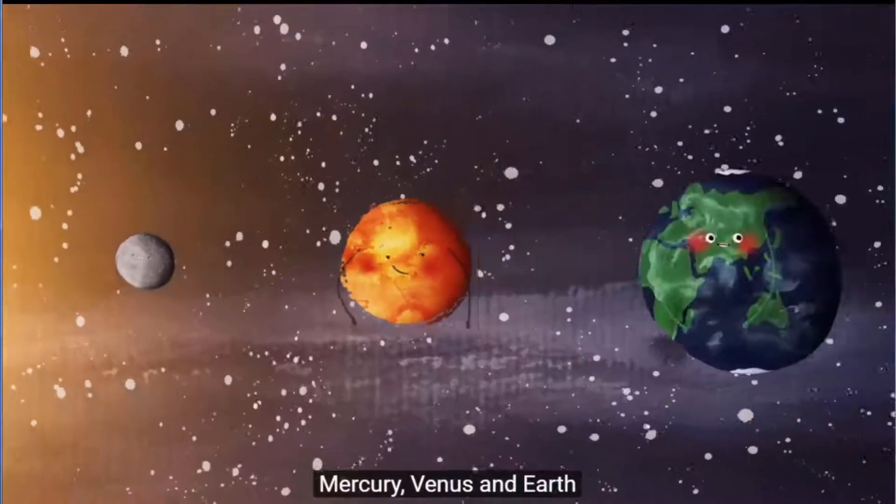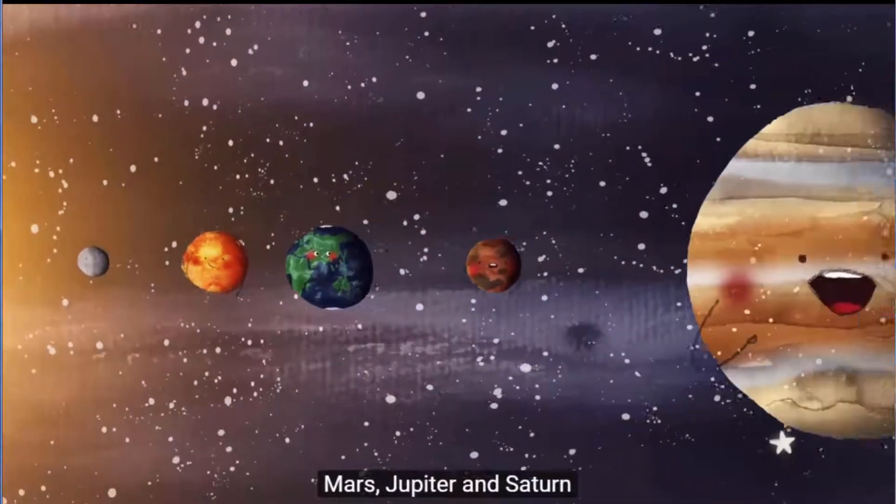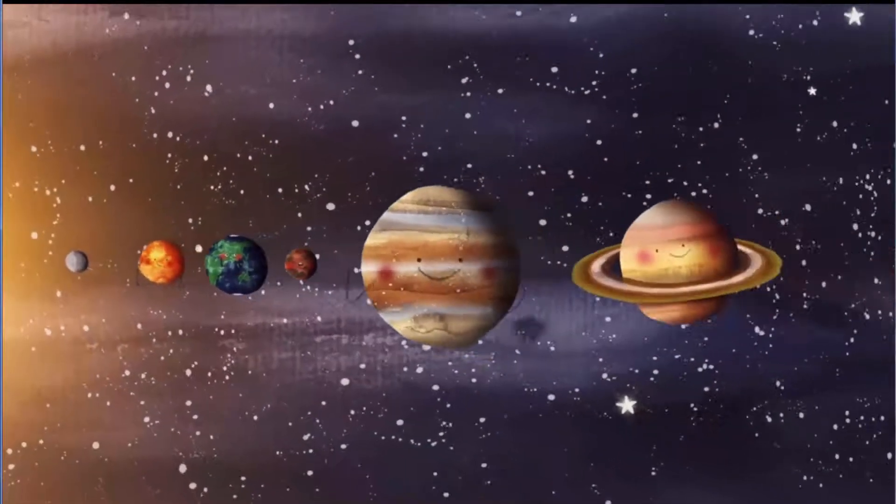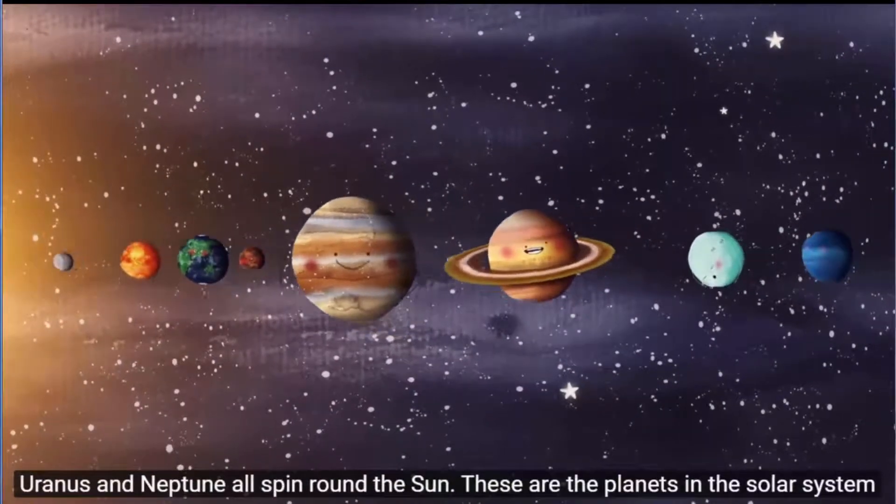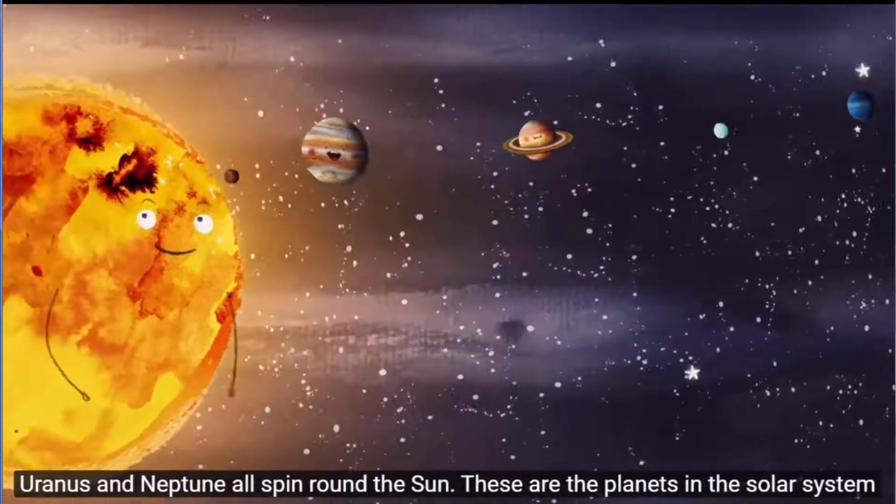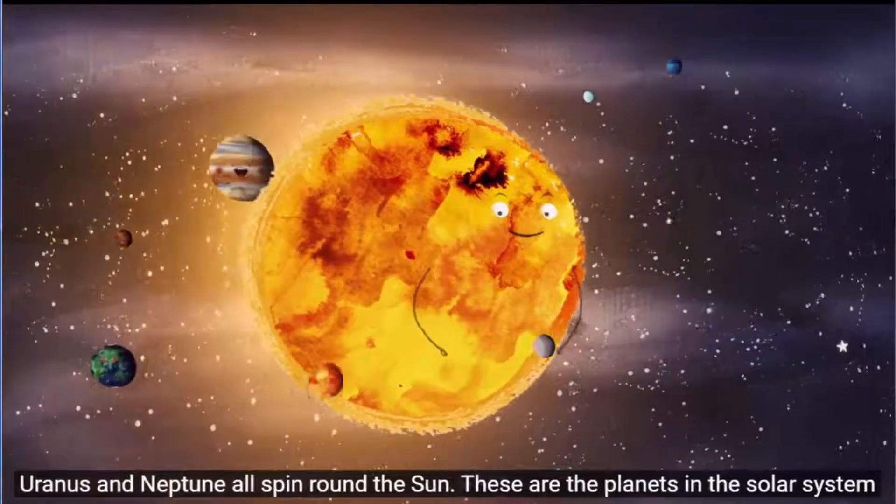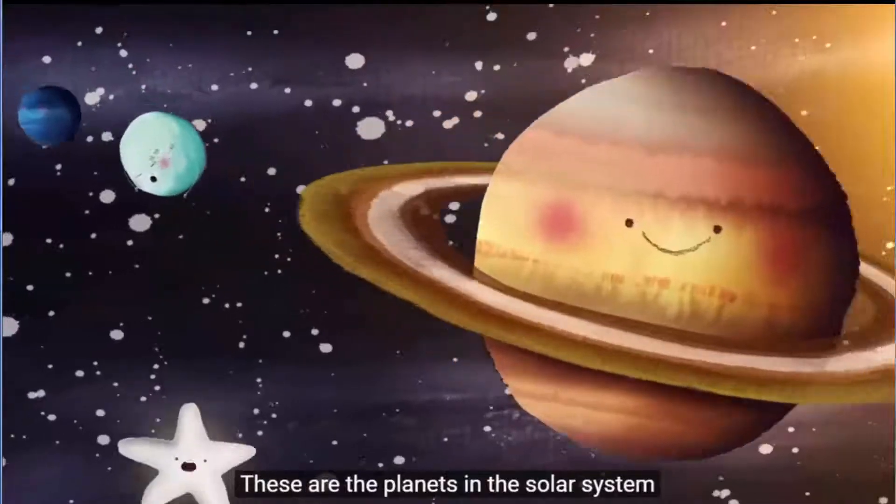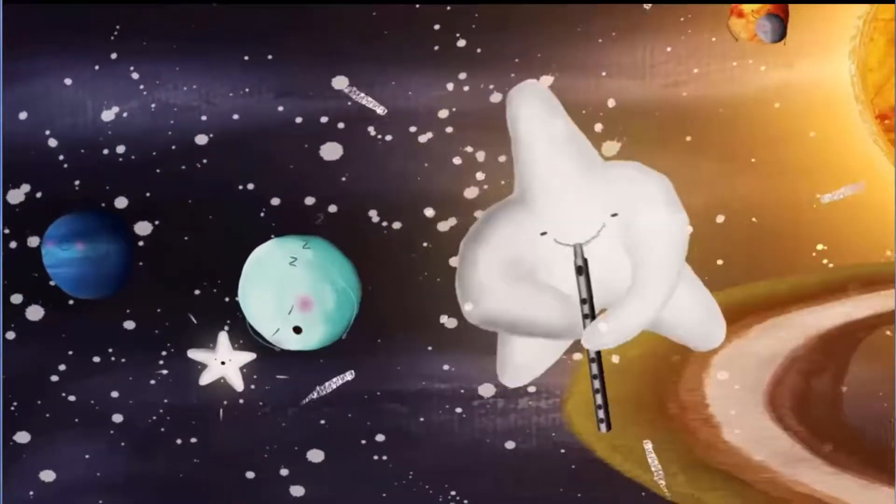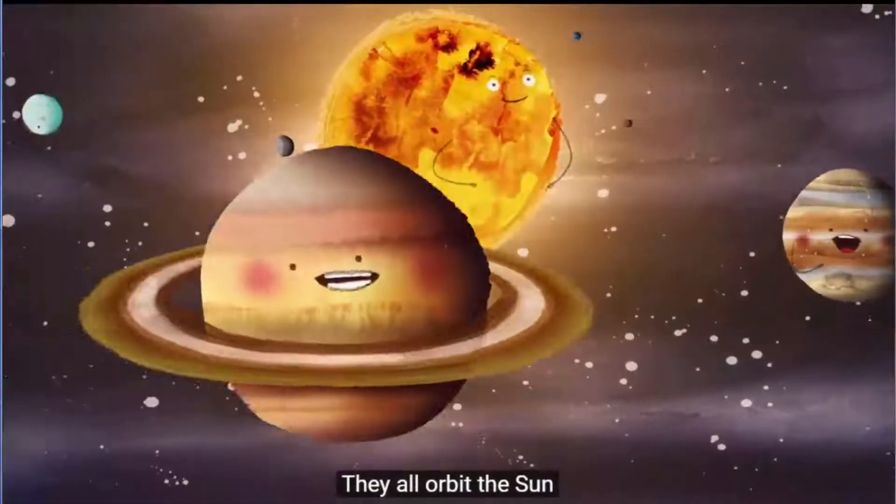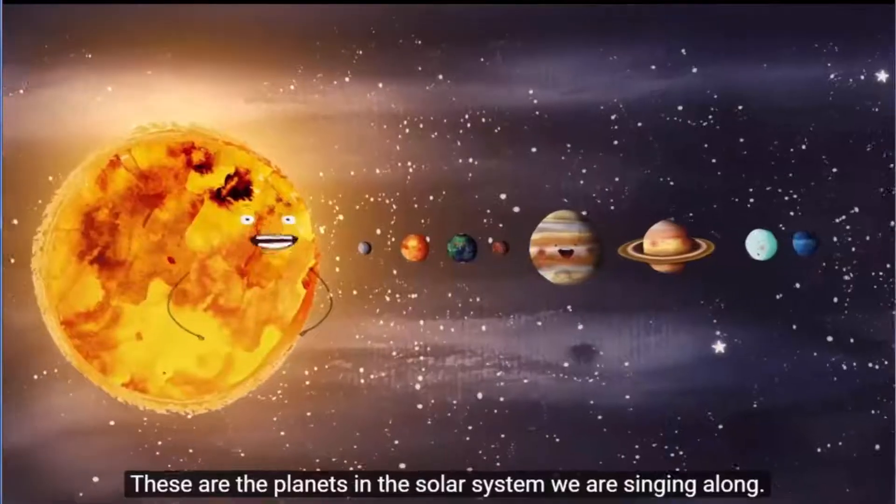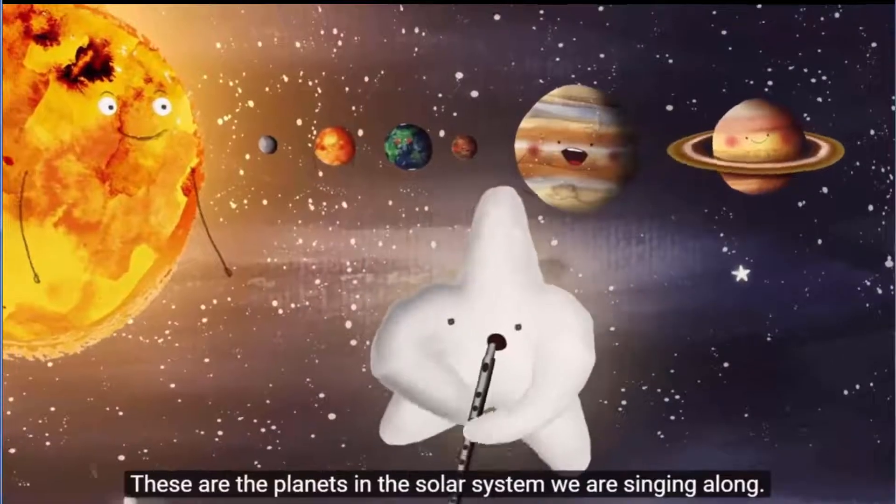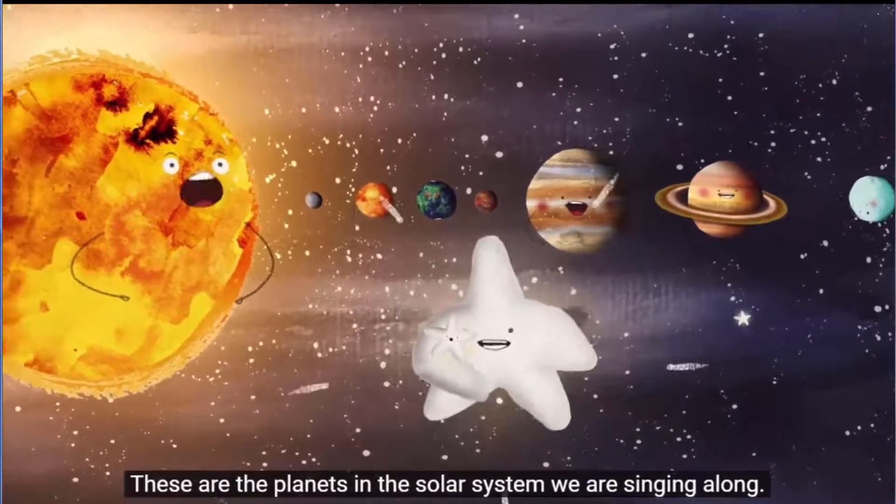Mercury, Venus and Earth, Mars, Jupiter and Saturn, Uranus and Neptune all spin round the Sun. These are the planets in the Solar System. These are the planets in the Solar System. They all orbit the Sun. These are the planets in the Solar System. We are singing along.